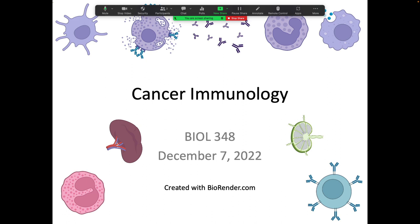It asks you for a graph — basically you want a graph with eight bars. Just do the average of the duplicate; you don't have to do a standard error or anything. Just average the duplicate and make a bar. You've got four cell types, each with and without beads. So do your four different cell types, with and without beads, absorbance. That's all that graph has to be. Don't stress about it.